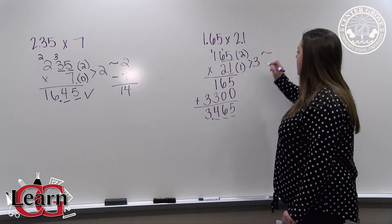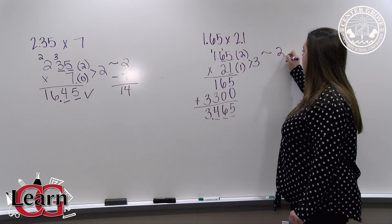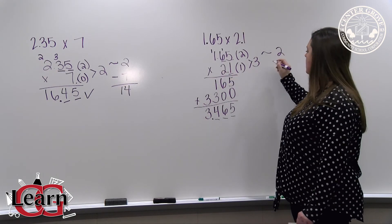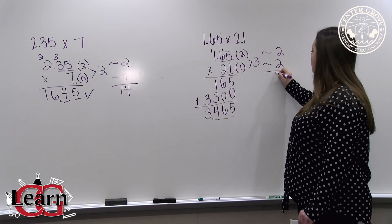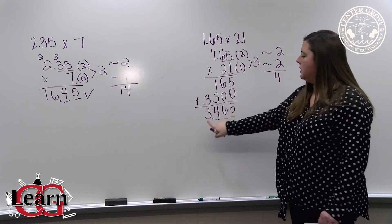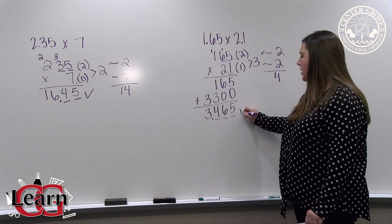Again, we're going to check for reasonableness by rounding. 1 and 65 hundredths is rounded to 2, and 2 and 1 tenth is rounded to 2. When we multiply 2 times 2, we get 4. 4 is very close to 3, so we know our decimal point is in the correct location.